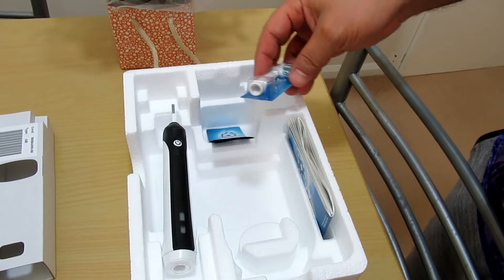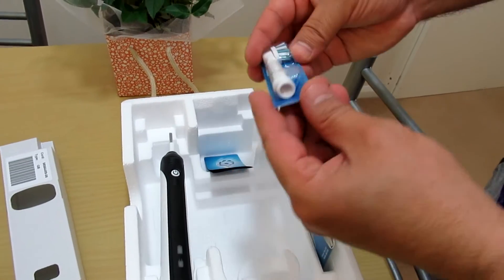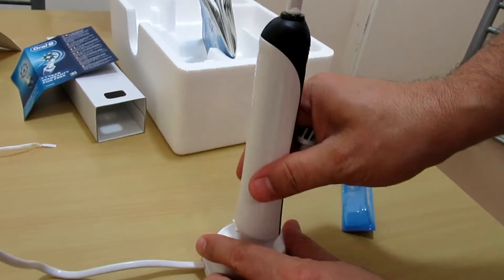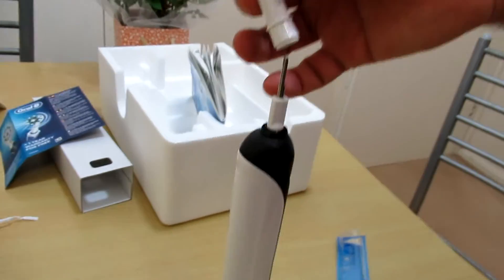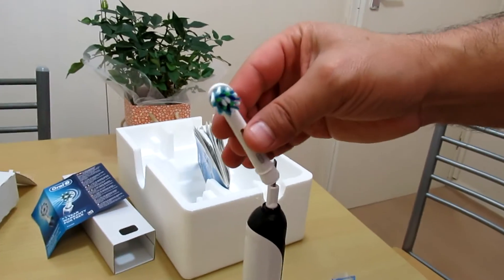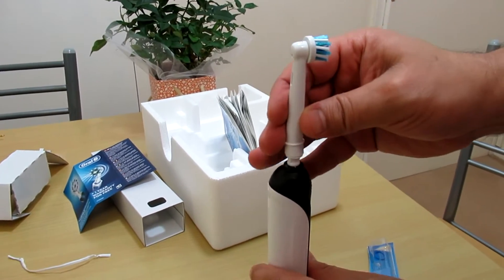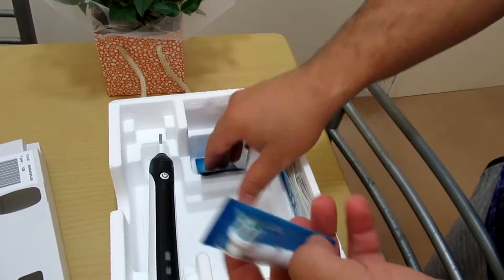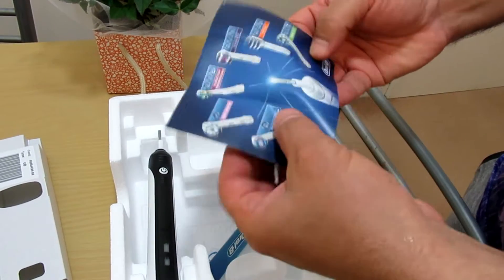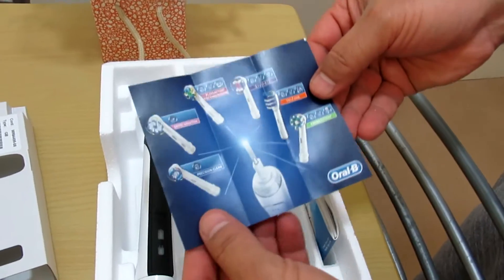And this is the head, the electric toothbrush head. Just put it like that and set. This is how it works.